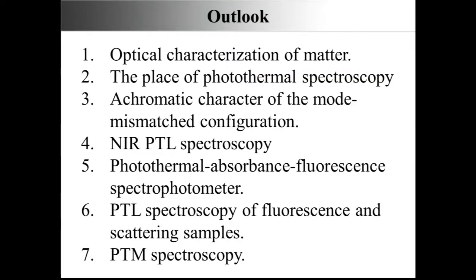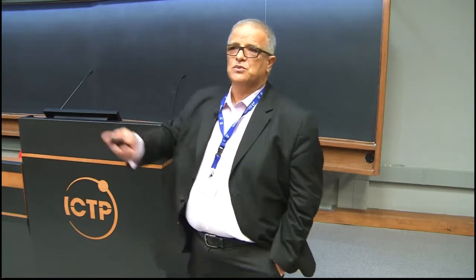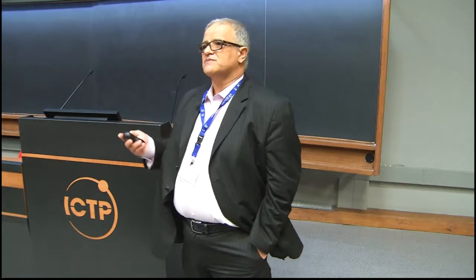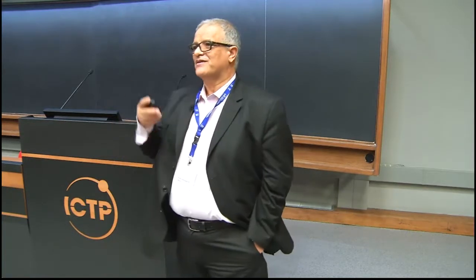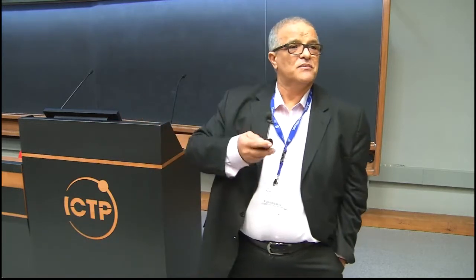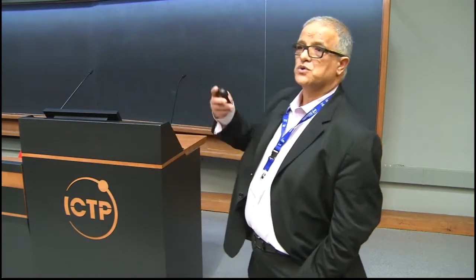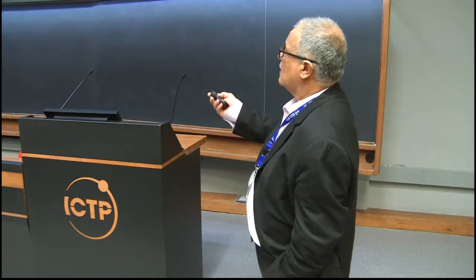I'll show why photothermal spectroscopy is not the same as absorption spectroscopy, with applications for fluorescent and scattering samples. Usually samples have scattering — for example, blood requires purification to remove blood cells and get plasma, but you still have turbidity. When analyzing water, there are many different particles producing turbidity and scattering that can affect your absorption measurements.